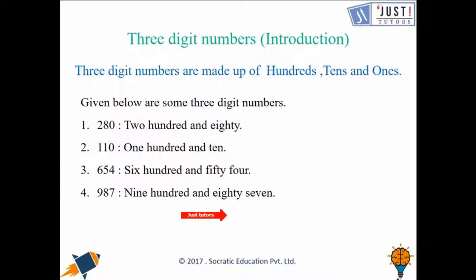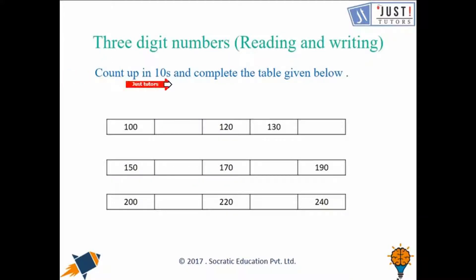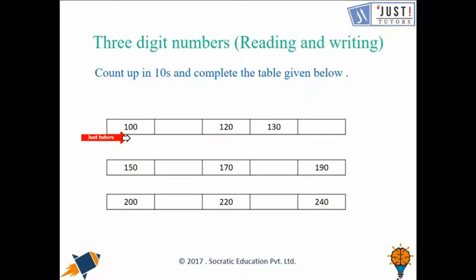Now let's move forward and learn about writing hundreds. Here we have to count up in tens and complete the table below — that means we add ten at each step. So one hundred plus ten makes one hundred and ten. Then one hundred and twenty, one hundred and thirty, and one hundred and forty.